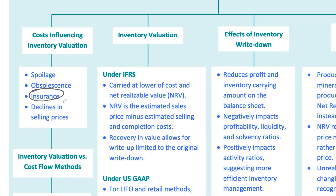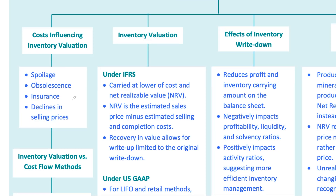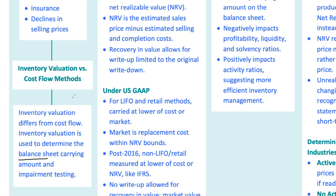Insurance — companies often insure their inventory to protect against risks like theft or natural disasters, and the cost of this insurance can affect how inventory is valued. Declines in selling prices — if a company has widgets initially valued at $10 each but the market price drops to $7, the company would need to adjust the inventory value downward. All these factors can lead to a write-down, where the company reduces inventory value on the balance sheet, which also reduces profitability because it increases the cost of goods sold.